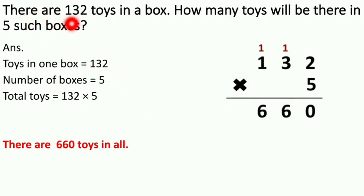So now next. There are 132 toys in a box. How many toys will be there in 5 such boxes? One box has how many toys? 132. Toys in one box is equal to 132. So 5 boxes, how many? Number of boxes is 5.